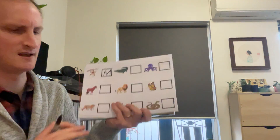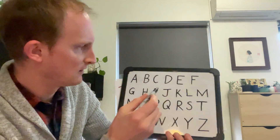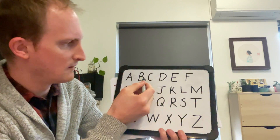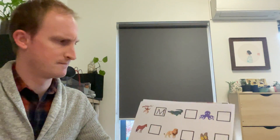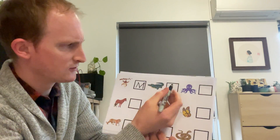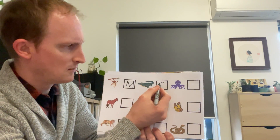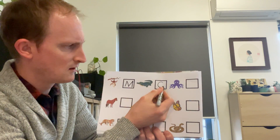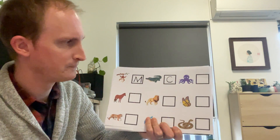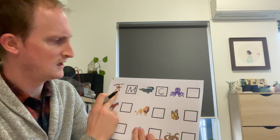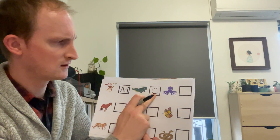Let's write a C. What does a C look like? Curve and up. Let's try to do a big, curving C. There's a C. We did a monkey with M, we did a crocodile with C.